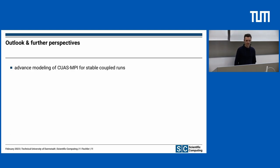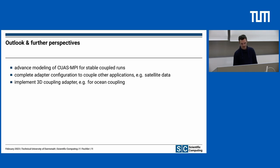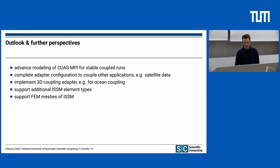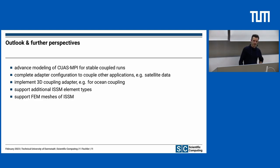At the current point, we need to advance our modeling of CUAS-MPI to be able to run stable coupled runs. Regarding our adapter, we need to complete and improve our configuration file so that we are able to couple other applications too — so that Daniel can benefit from our adapter as well. For arbitrary coupling, 3D coupling might also be of interest. We also need to implement support for other element types available in ISSM and for finer meshes, though currently we only use linear finite elements and one element type.